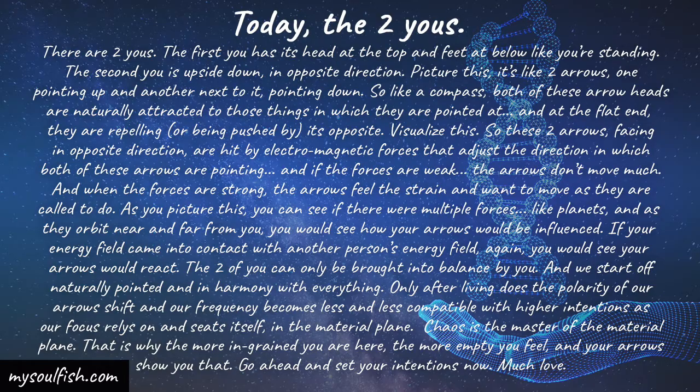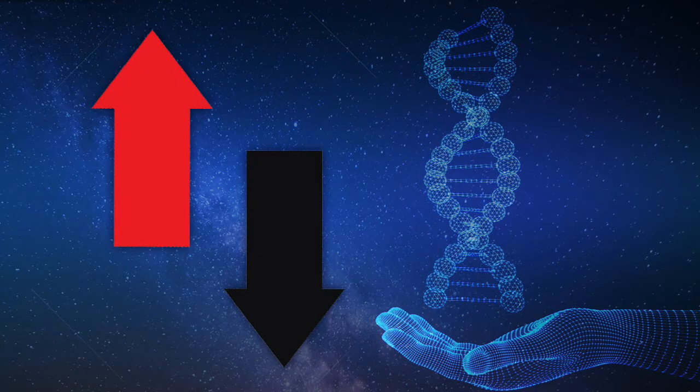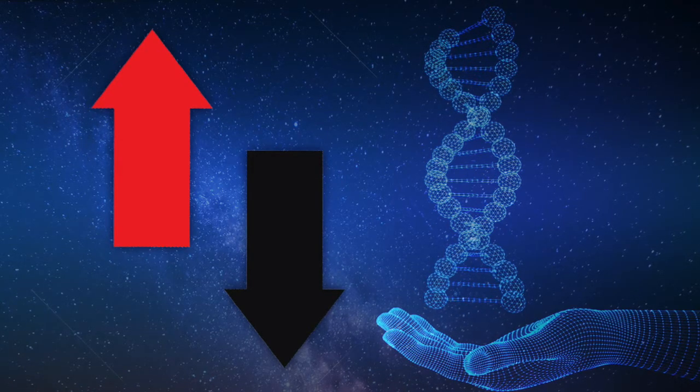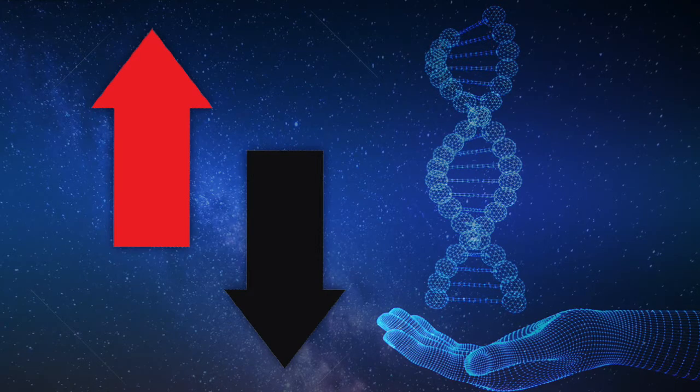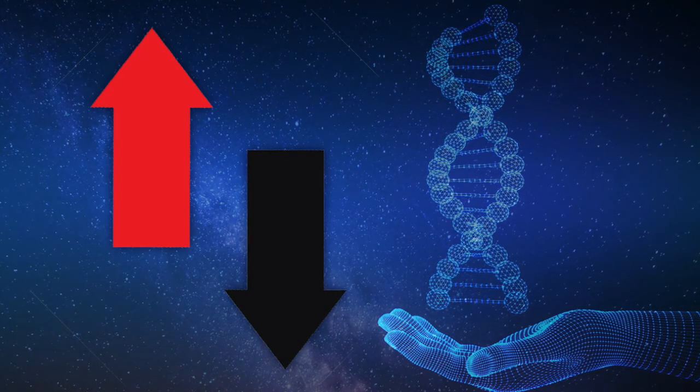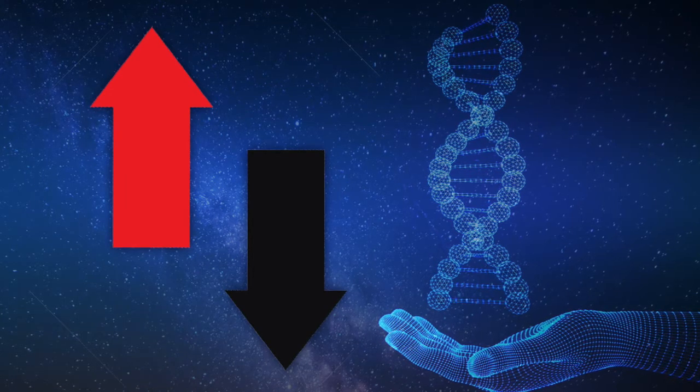The first U has its head at the top and feet below like you're standing. The second U is upside down in opposite direction. So picture this. It's like two arrows, one pointing up and another next to it pointing down.